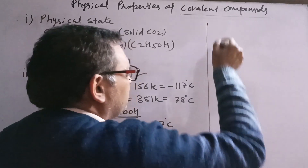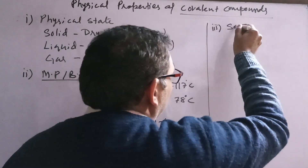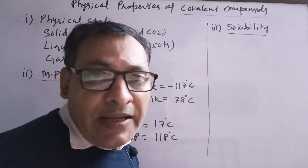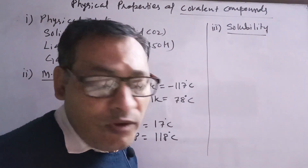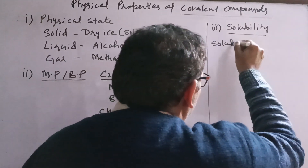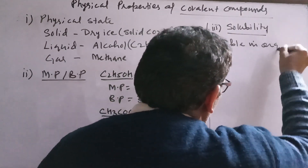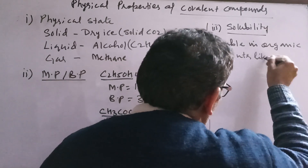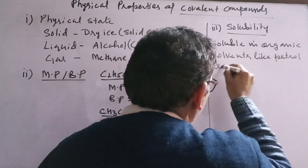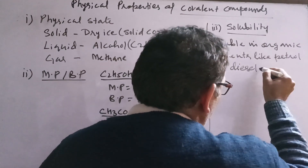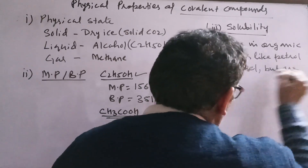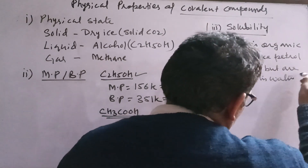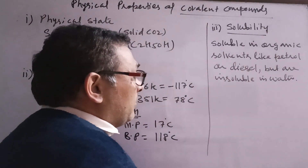The next property is solubility. Covalent compounds are generally soluble in organic solvents like petrol or diesel, but they are insoluble in water. Exceptions include alcohol, which is soluble in water.